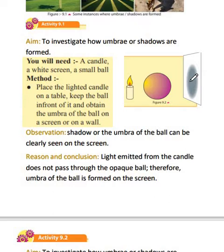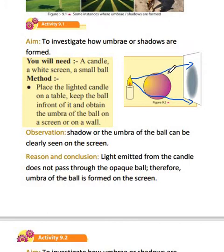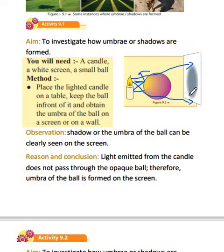Why is this here? The light from the candle will go this way and various other directions. But as this ball is an opaque object — meaning opaque objects do not allow light to go through them — light does not pass through it. It will reflect most probably, but it does not go through it. Therefore, there is a gap where light does not pass, and that gap creates the black spot called the umbra or shadow.